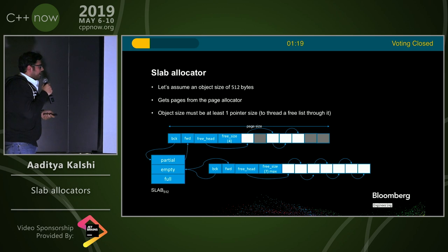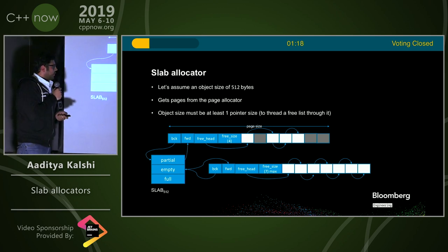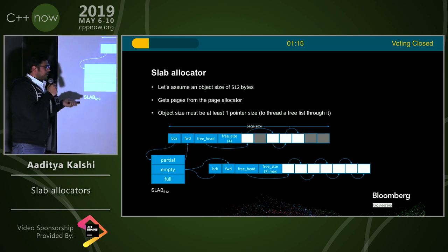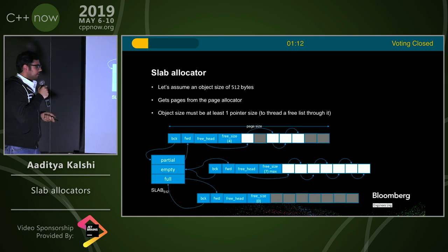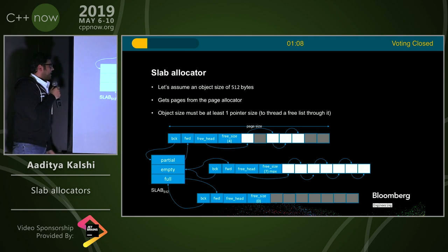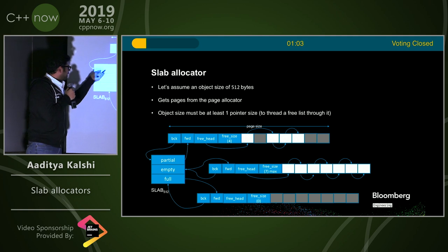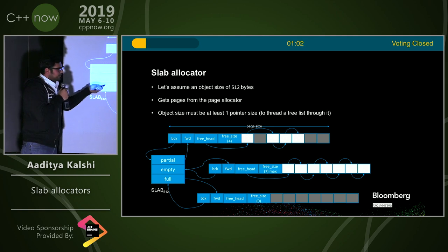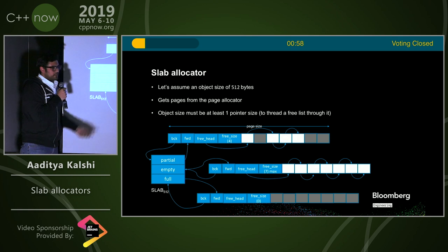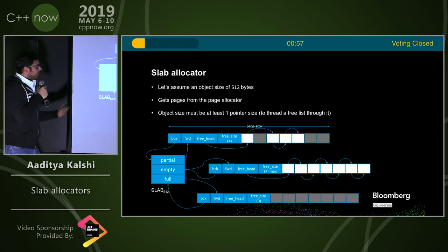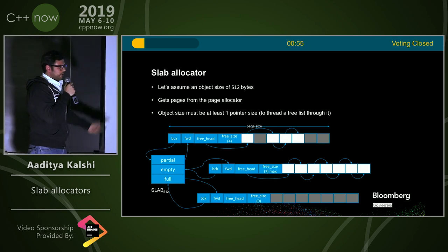The free_head is threaded through the free nodes in the slab. It's pretty similar to a pool in that you can find memory for an allocation in constant time. The empty list stores completely free slab pages, and there are also full slab pages. These three lists are useful because, for example, if you free everything in a slab page, you can move it from partial to empty. If you suddenly need more memory, you can move them back. You might want to be careful of thrashing, but there are ways to avoid that.